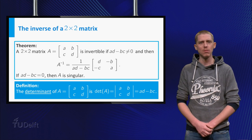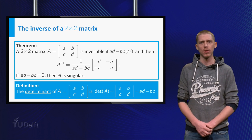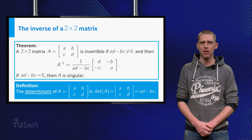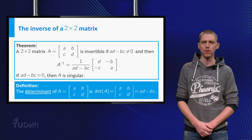Because ad minus bc is an important number, we define this number as the determinant of A. Now you know when a 2 by 2 matrix has an inverse.